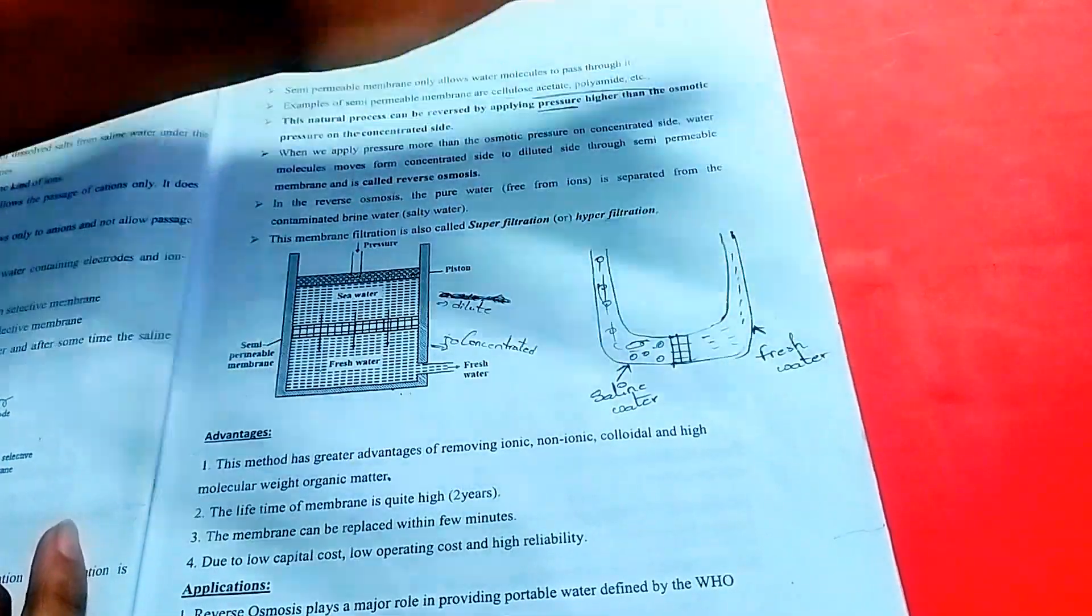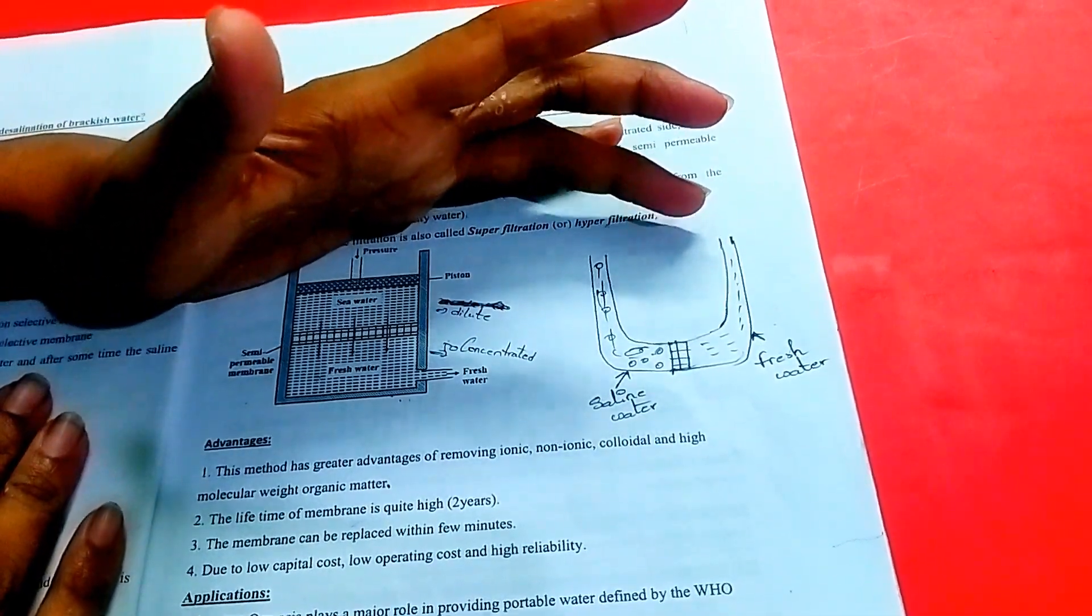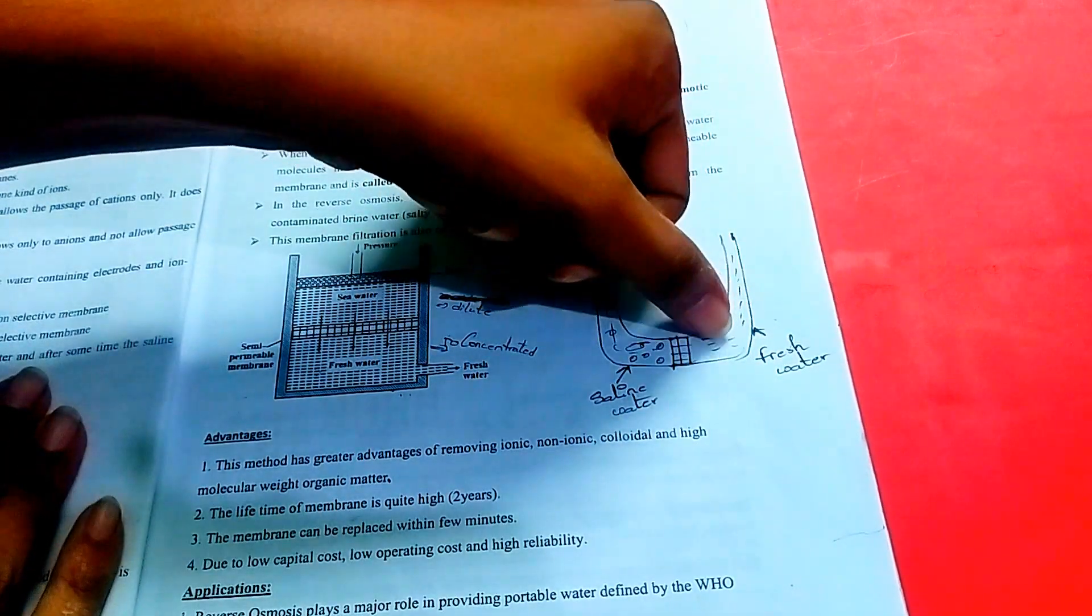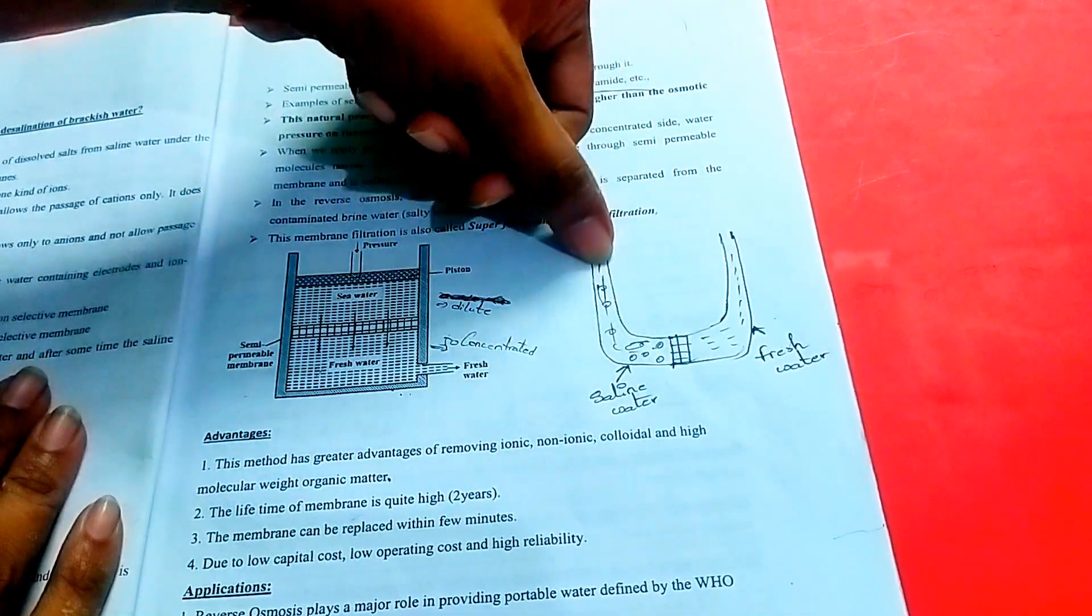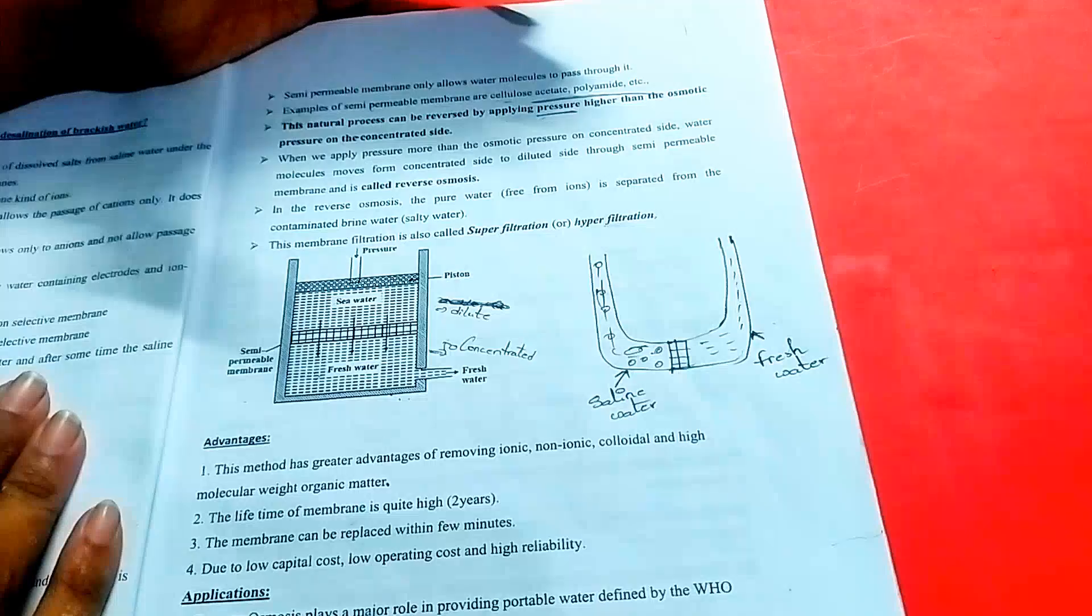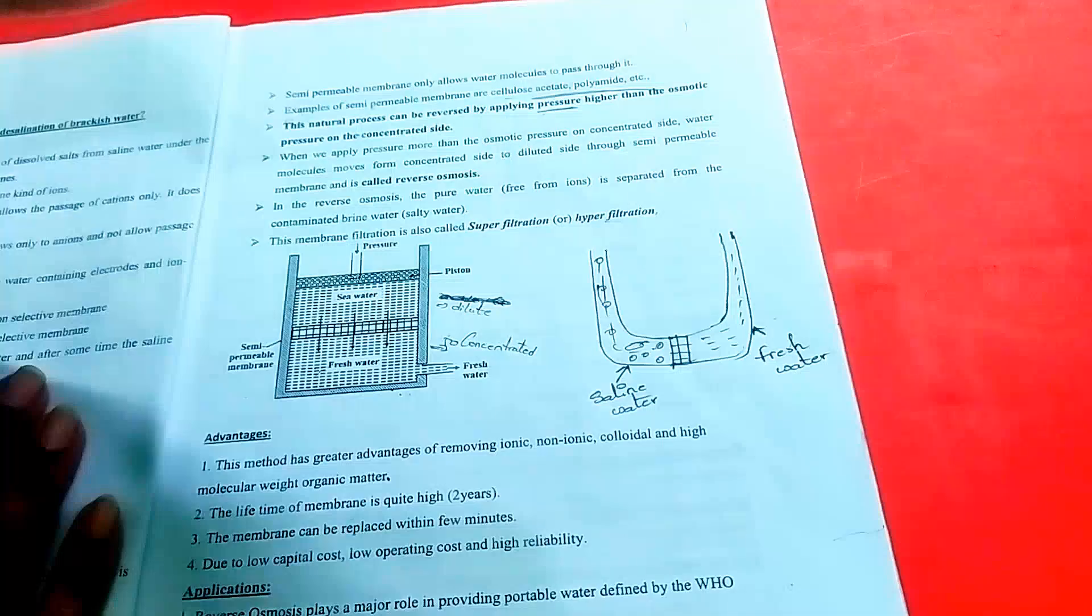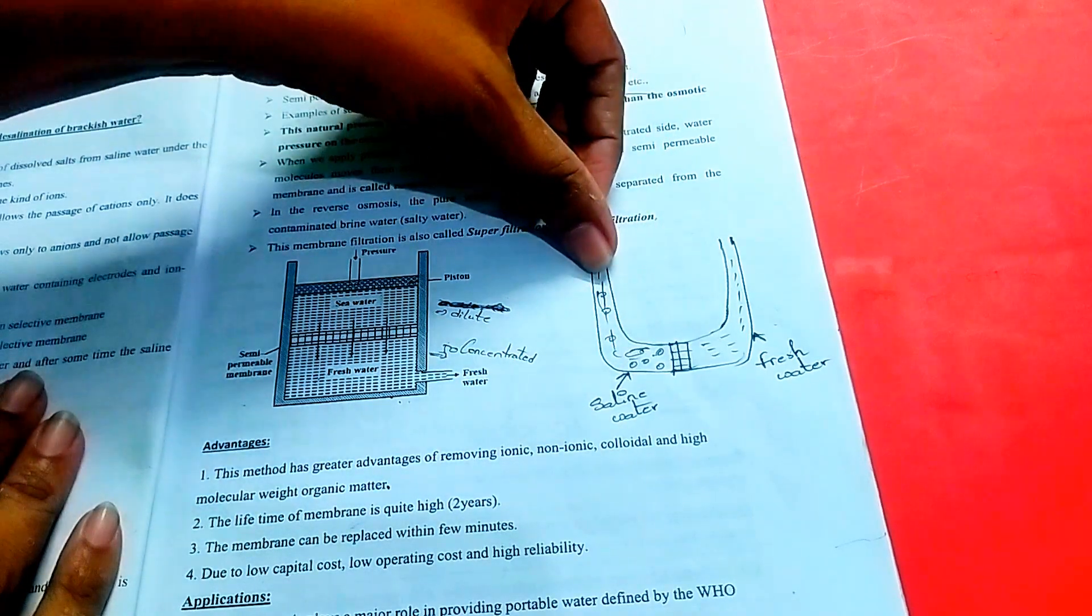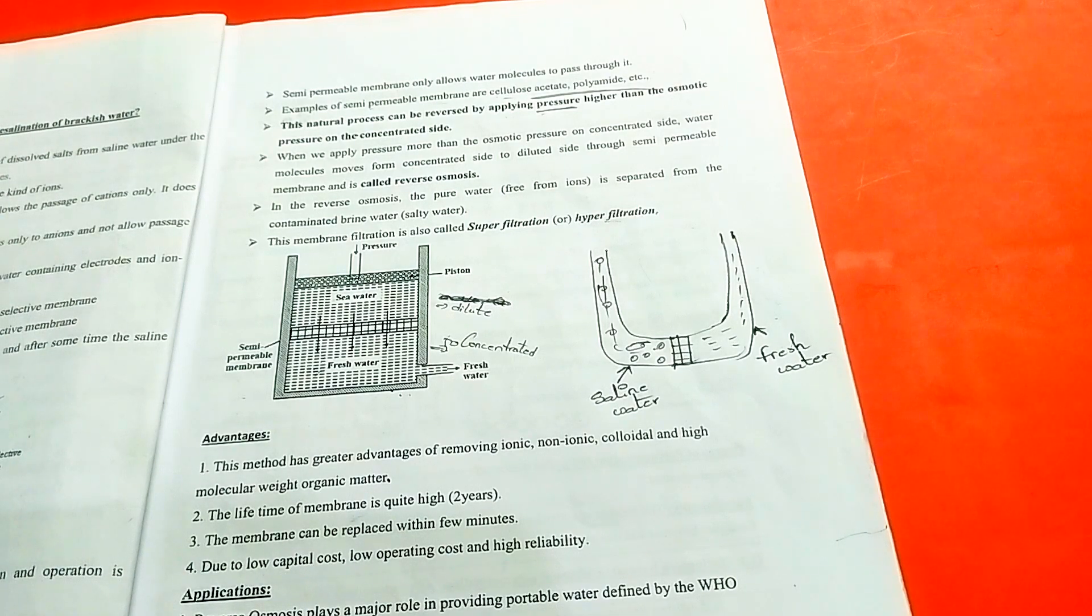For example, saline water is flowing with fresh water. Now in the natural process, when we see the pressure on the fresh water side, water level will increase. That is the natural process. This is a general osmosis process.